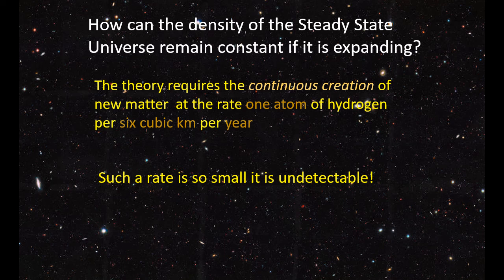If we rerun the animation, assuming the Steady State Theory is correct, over billions of years, and once again you imagine each small white ellipse is a galaxy, then as the universe expands, new galaxies shown as yellow ellipses are created from this created matter. And the total number of galaxies in the region of space doesn't actually change.